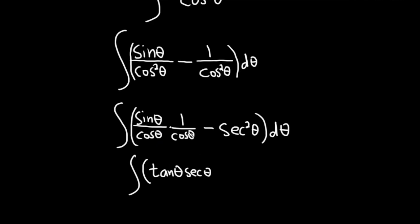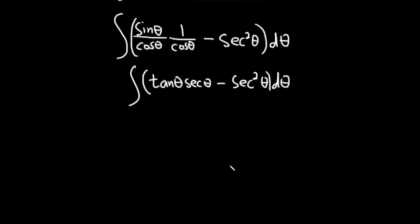Sine over cosine is tangent, one over cosine is secant, minus secant squared theta d theta. And I'm just going to rearrange this just so you see the formula a little bit more clearly. Tangent times secant is really secant times tangent. So this is secant theta tangent theta minus secant squared theta d theta.